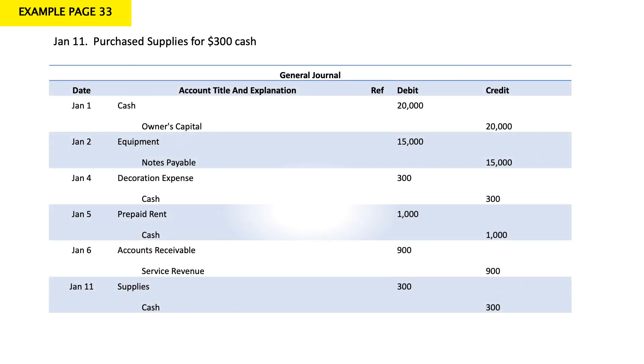January 11: purchase supplies for $300 cash. My cash decreased because I paid $300, and my supplies increased. Supplies are assets — debit accounts — they increase in debit and decrease in credit. Since my supplies increased, I debit supplies $300 and credit cash $300.